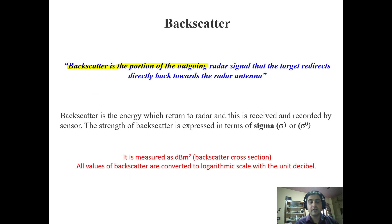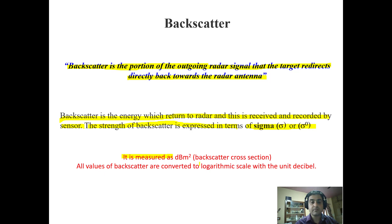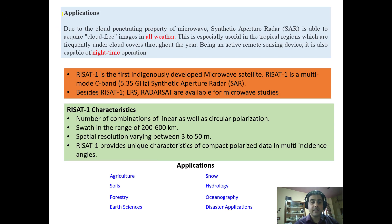Backscatter is measured here rather than reflectance values or digital numbers as in optical remote sensing. Backscatter is the portion of the outgoing radar signal that the target redirects back towards the radar antenna — the energy which returns to the radar and is received and recorded by the sensor. The strength of backscatter is expressed as sigma-naught (σ⁰), measured in dB (decibel meter square), and all backscatter values are converted to logarithmic scale with the unit decibel.